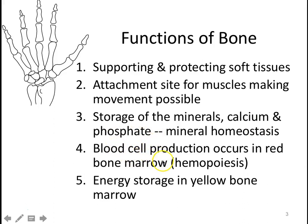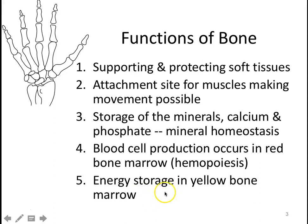New blood cells are going to be formed in red bone marrow — we call this hemopoiesis. White blood cells and red blood cells all form there. And then there's a little bit of energy storage in yellow bone marrow as fat — not a significant amount, but there is a little bit of energy storage in bones.